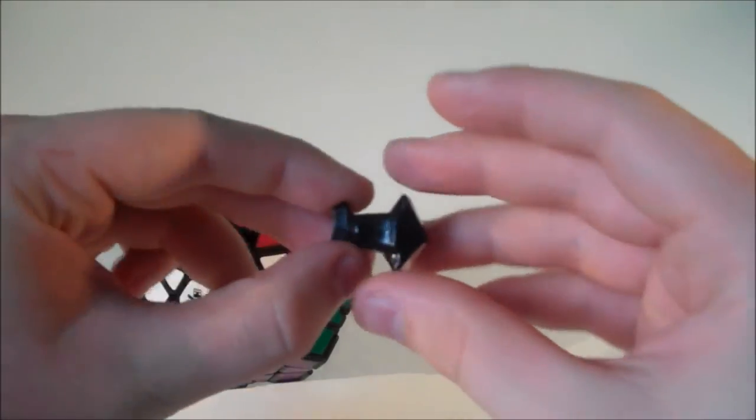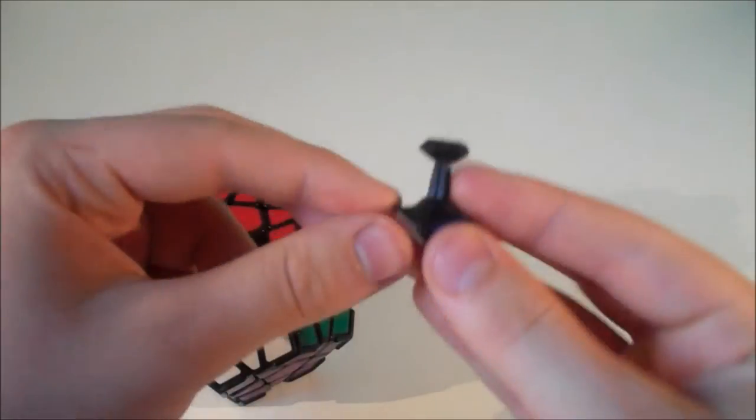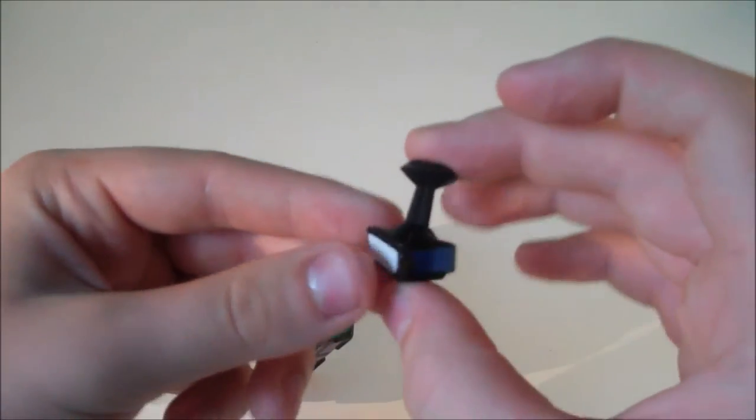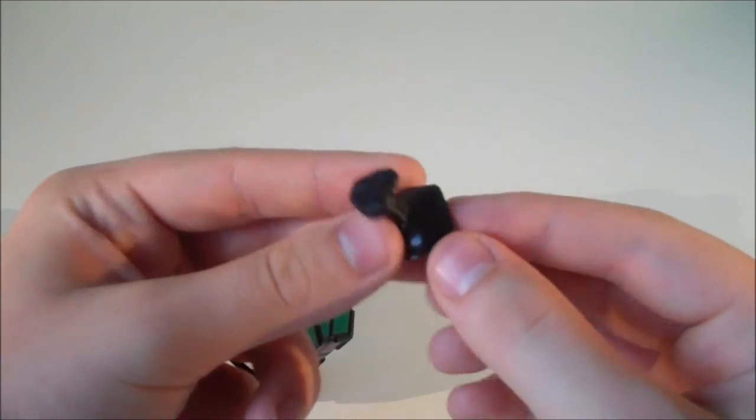I'm going to see if I can pop out a piece. Okay, so wow, that is really cool. It looks just like a DaYan Guhong piece. And what about the corners? Yeah, so you can definitely tell that this is a DaYan Cube. Judging by the pieces, they are split into three.